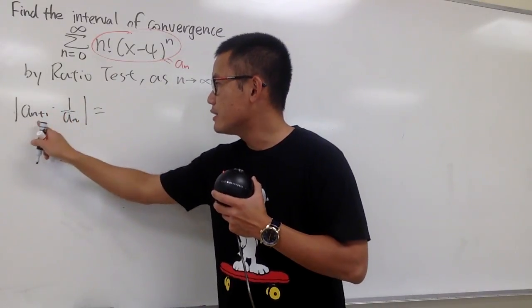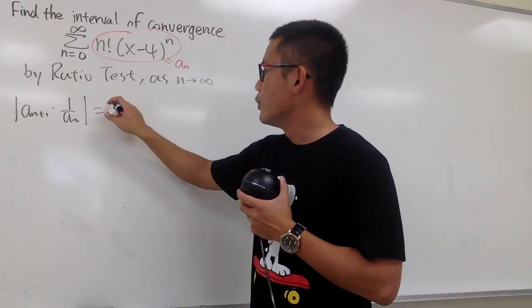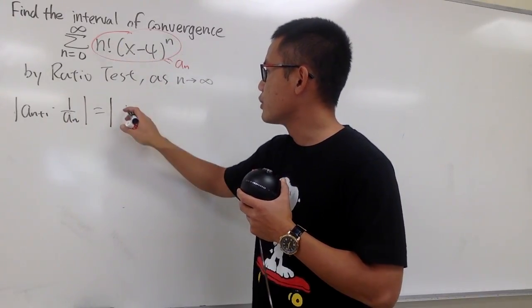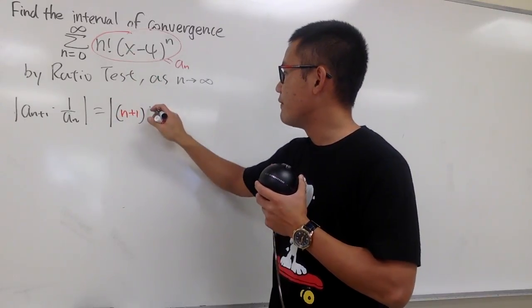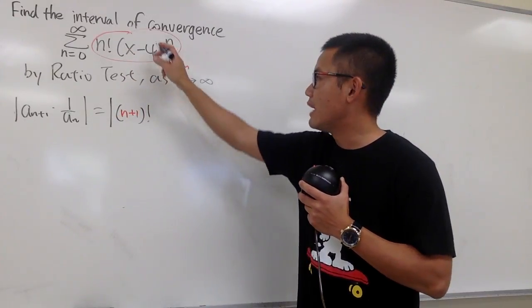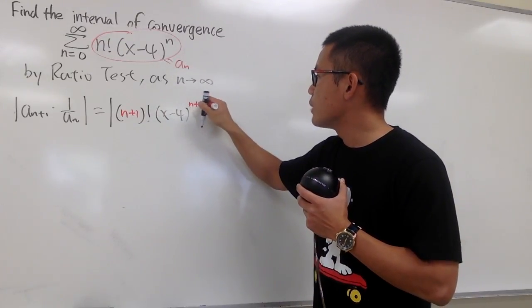For this one, let's go ahead and plug in n+1 into this n and that n. We will have the absolute value, and this is going to give us (n+1) factorial, and we will have (x-4) raised to the (n+1) power like that.